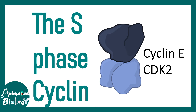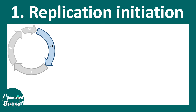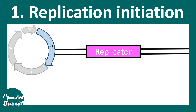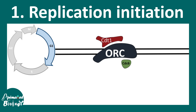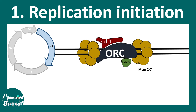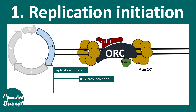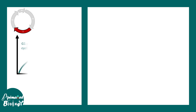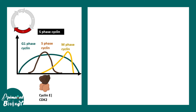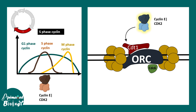Moving to S phase cyclins: cyclin E paired with CDK2 is the S phase cyclin-CDK complex. At the end of G1, the replicator sequence is already bound to the origin of replication complex, which also binds CDT1 and CDC6, loading the MCM2-7 helicase to form the replication bubble. However, this requires a licensing event driven by cyclin-dependent kinases. Cyclin E-CDK2 activity is high in S phase, and this complex phosphorylates CDT1 and CDC6 to allow the replication bubble to form — this is the origin activation or licensing event.